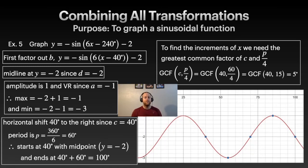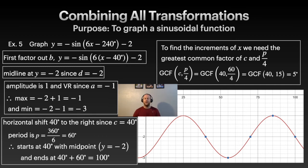With all this information we can build the graph. Not every point on the x-axis is labeled, but the tick marks represent increments of 5. The five key points go from 40 to 100 degrees as promised. Because of the vertical reflection, I went midpoint-down instead of midpoint-up — that's where the reflection comes in.